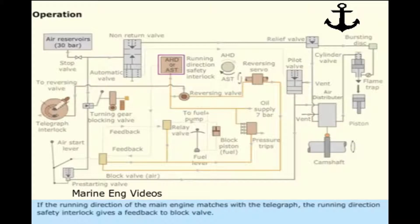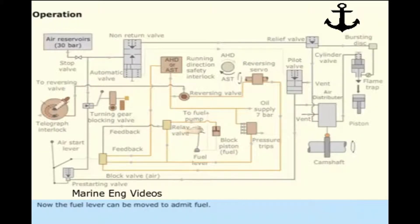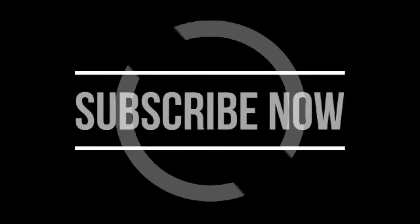If the running direction of the main engine matches with the telegraph, the running direction safety interlock gives a feedback to the block valve. The block valve gives a feedback to the relay valve and oil flows to the block piston valve. Now, the fuel lever can be moved to admit fuel.